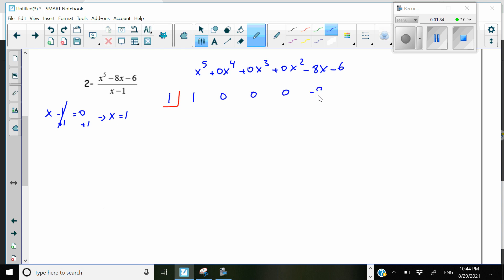The coefficient of the first one is 1, then it's 0, 0, 0, negative 8, and negative 6. Then I'm going to draw a straight line here and start by bringing the first number down.